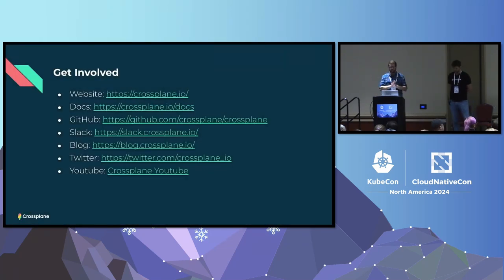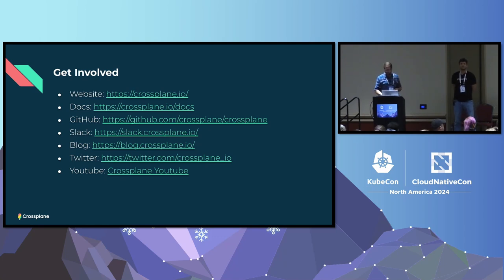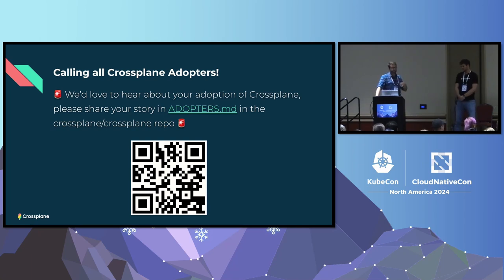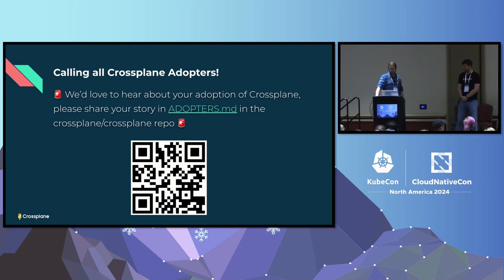If you want to get involved in the project, go to crossplane.io — that's the landing page for all the stuff. We're pretty deep into the graduation process now, and it is never too late to share your story. If you're using Crossplane successfully, go to the adopters file in the main Crossplane repo and you can update it to share your story with us. I think that's all we've got — thanks everybody.